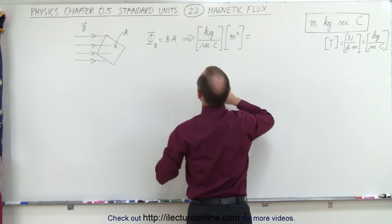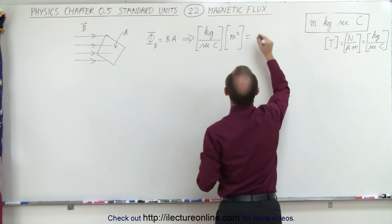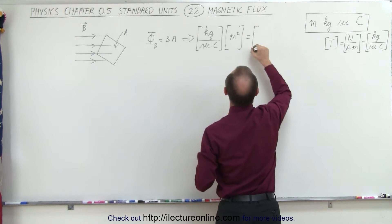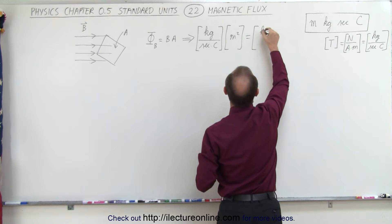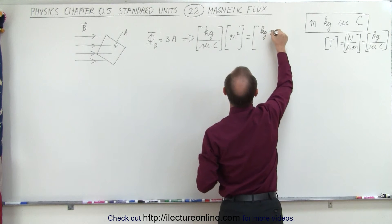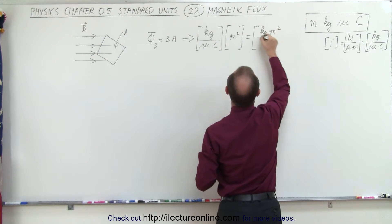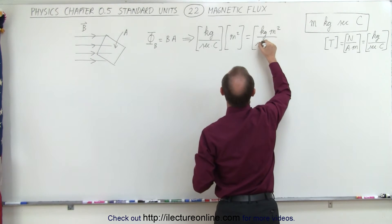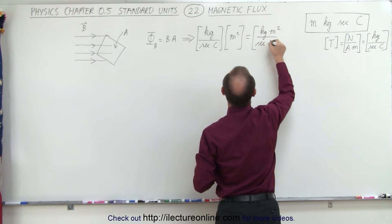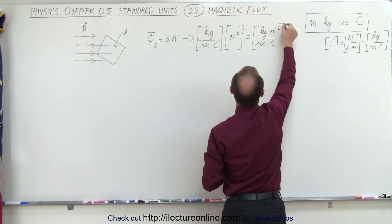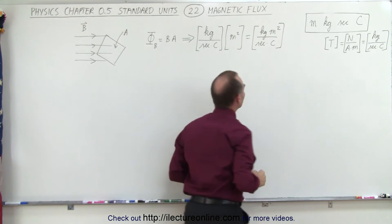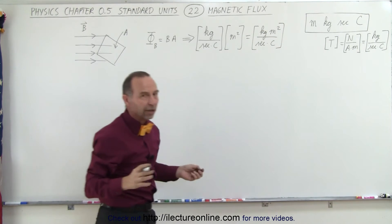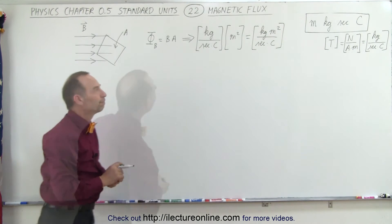This means that the units for magnetic flux are simply kilograms times meters squared, divided by seconds times coulombs. That's fairly uneventful.